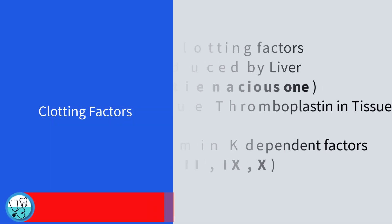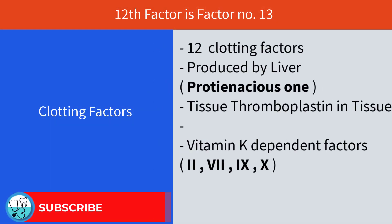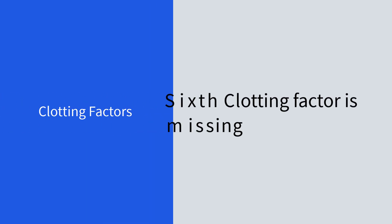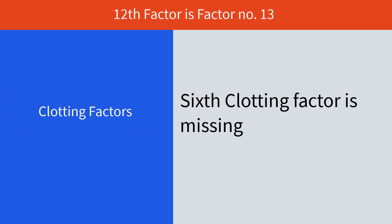There are only 12 clotting factors that are discovered so far, but the 12th one is factor number 13. This is because the sixth factor is a hypothetical one and is either not yet discovered or doesn't exist. So remember this statement: the 12th factor is factor number 13.